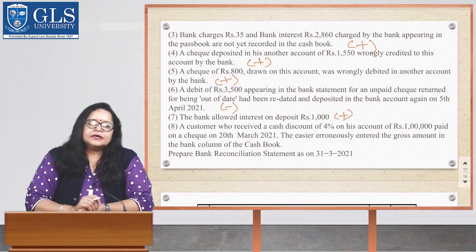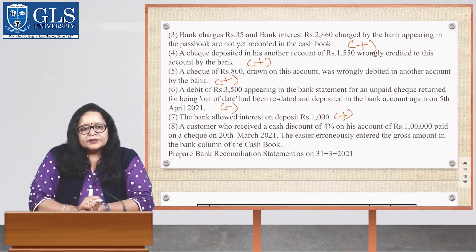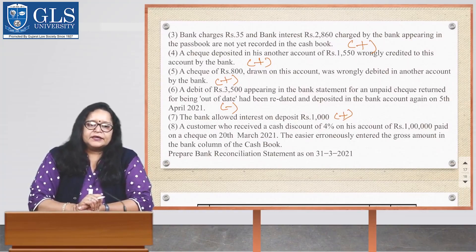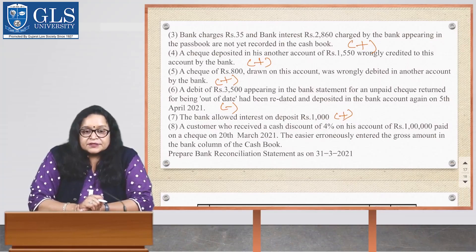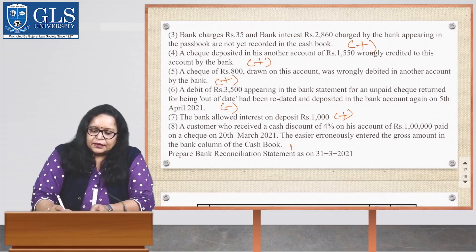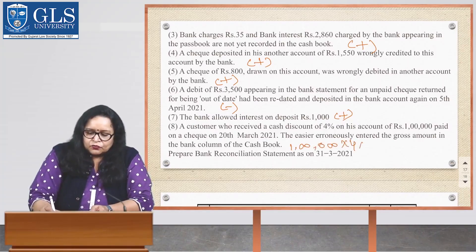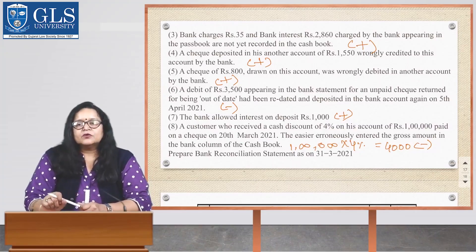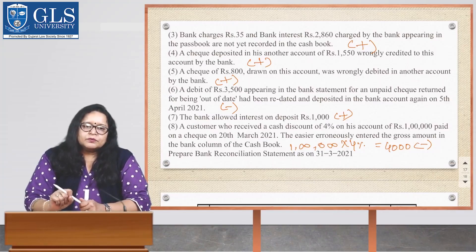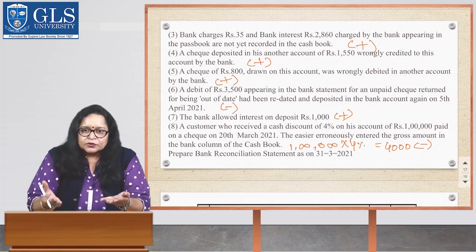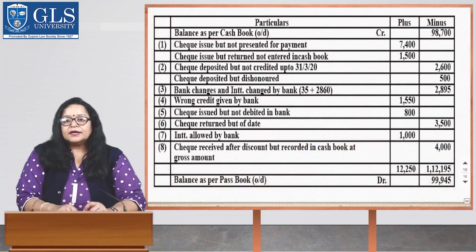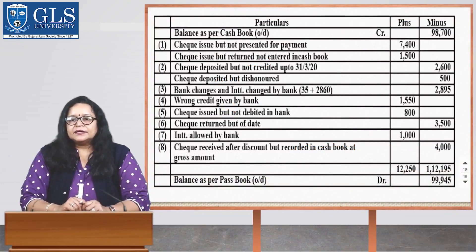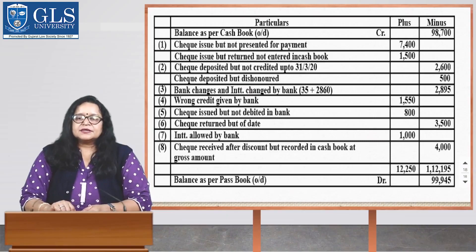A customer who received a cash discount of 4% on his account of Rs. 1,00,000 paid by check on 28th March; the cashier entered the gross amount in the bank column of the cashbook. The discount amount is Rs. 1,00,000 × 4% = Rs. 4,000 — deduct Rs. 4,000. After all adjustments, the final answer — balance as per passbook — is Rs. 99,945. With this, I am ending this session. Thank you very much. Bye.